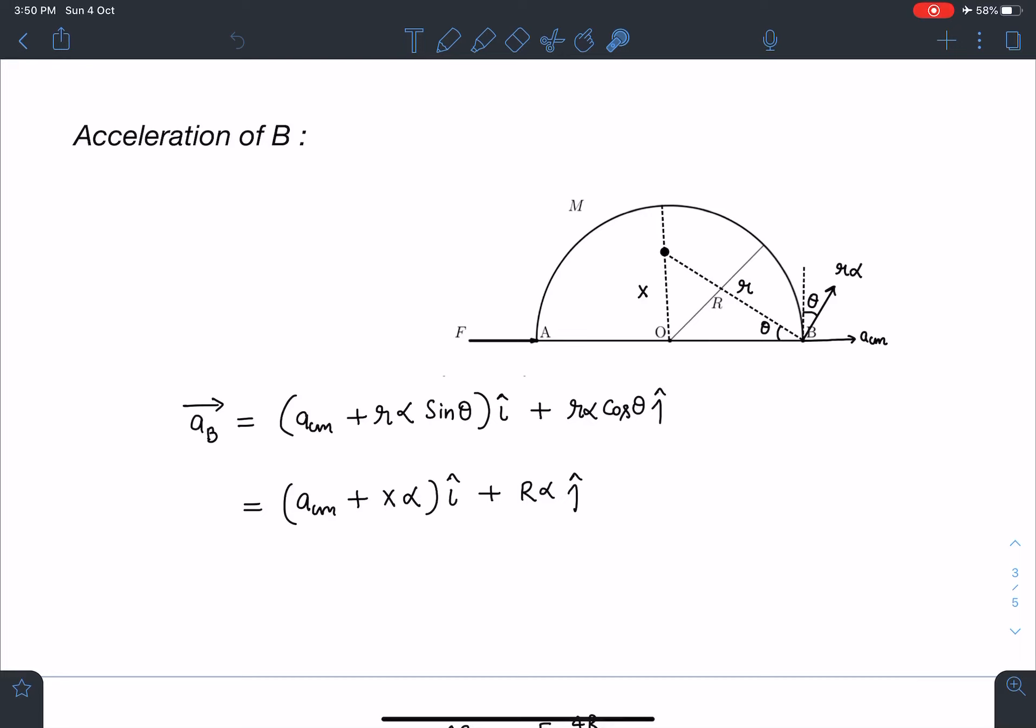You can see this r sin theta directly I can write as x, and similarly r cos theta I can write as capital R. So my final answer here is going to be acm plus x alpha i-cap plus capital R alpha j-cap. This is going to be the acceleration of this point B.